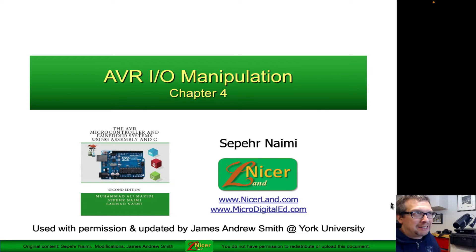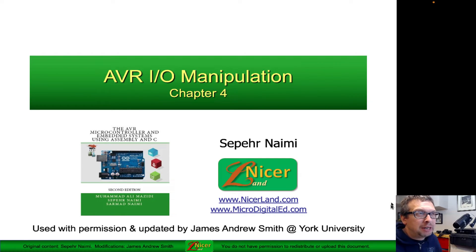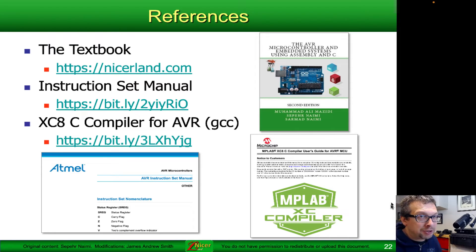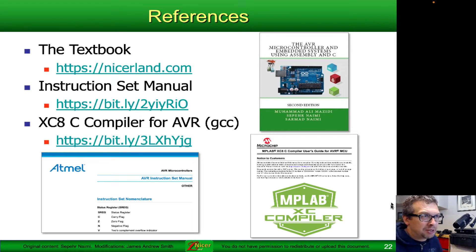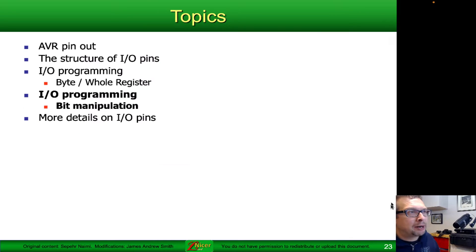Whole register manipulation isn't super efficient in many cases — you often only want to change one or two bits or make changes based on a single bit. While whole register manipulation can work in many cases, there are also many cases where you just want to make a single change to one particular bit on a register. For that we reference the AVR microcontroller book, the instruction set manual, and the C compiler documentation for XC8 or GCC.